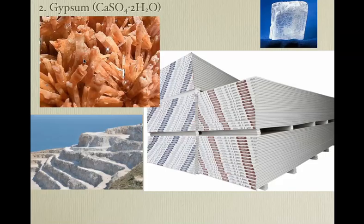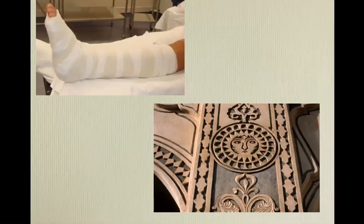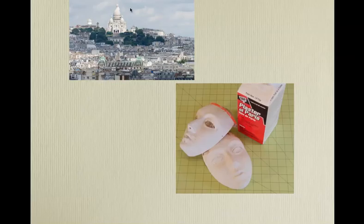Number two on Mohs scale: gypsum. These are crystals of gypsum — gypsum is an evaporite. Here's a gypsum mine. We tend to make gypsum into wallboard, and then into plaster casts. Those of you who have broken bones might have had gypsum applied to your body, though now we're using more of a polymer. We mold it into decorations for buildings.